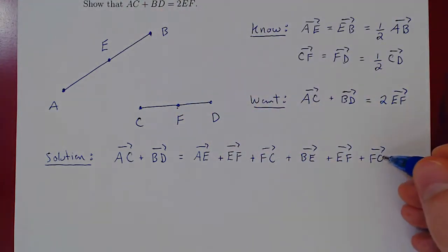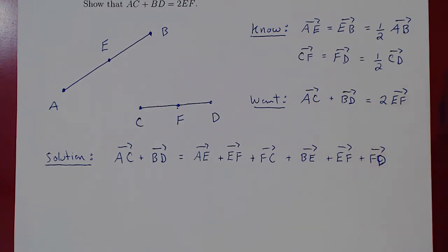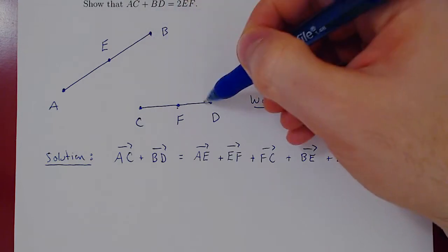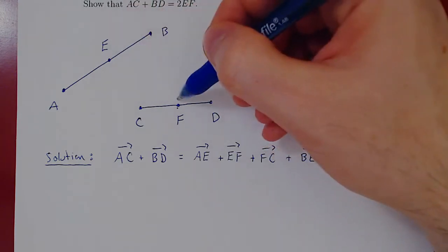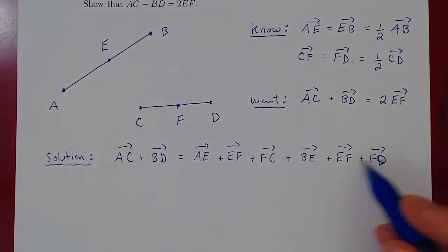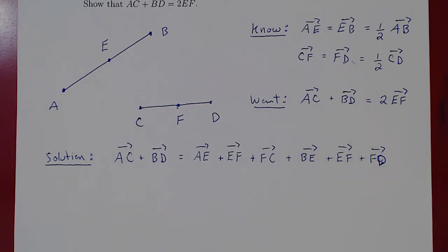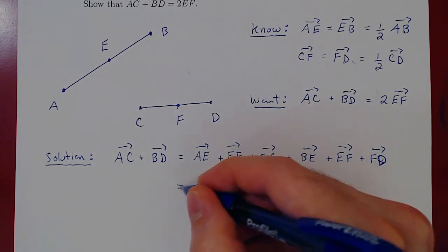And now we've walked from B to D. Oops, my bad. This is FD. The vector was BD. So we've walked from B to E, E to F, F to D. And so we've walked from B to D. And now the idea is, let's see what we have so far.